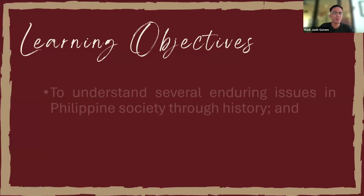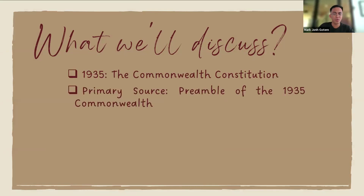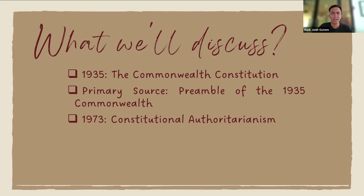In this video presentation, we will be discussing the 1935 Commonwealth Constitution and its preamble, as well as the 1973 Constitutional Authoritarianism. Our last discussion already covered two constitutions: the 1897 Constitution of Biak-na-Bato and the Malolos Constitution of 1899. Now we'll be targeting to finish another two constitutions, which are the 1935 and the 1973 Constitution.